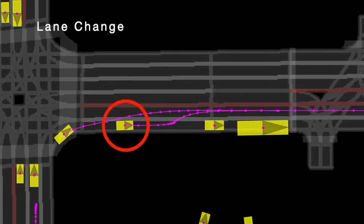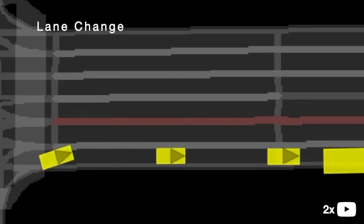In this scenario, the actor slows down for a parked vehicle ahead, then waits for a nearby actor to pass, and finally lane changes to make progress.